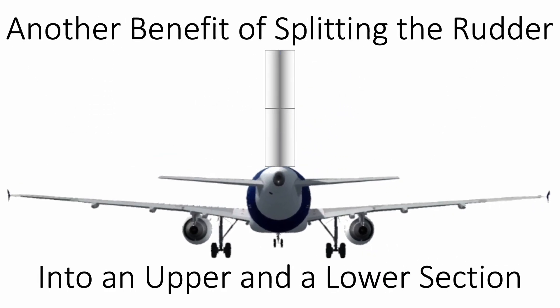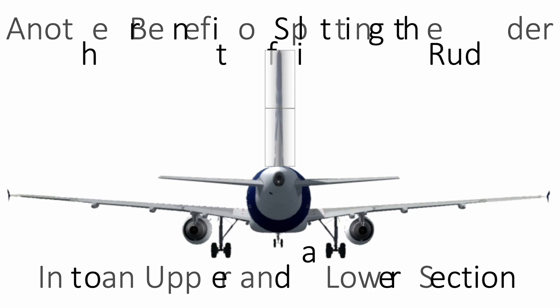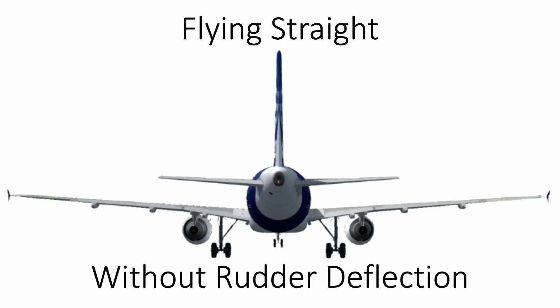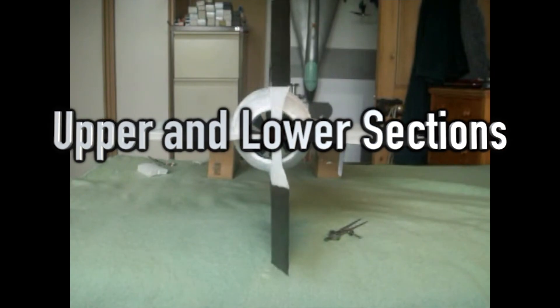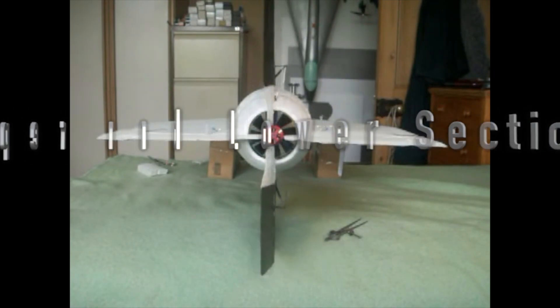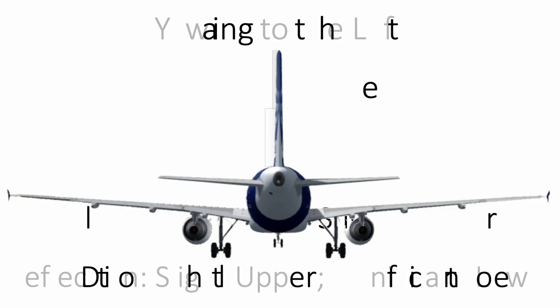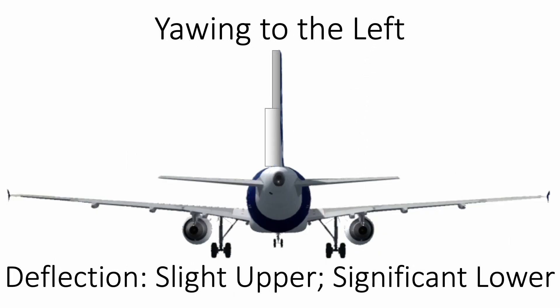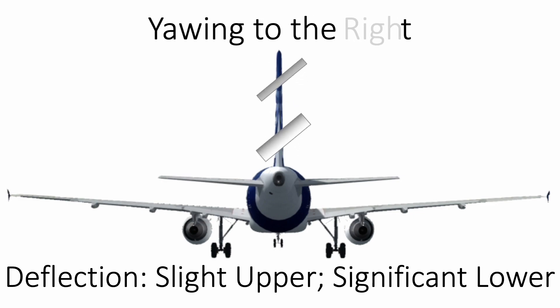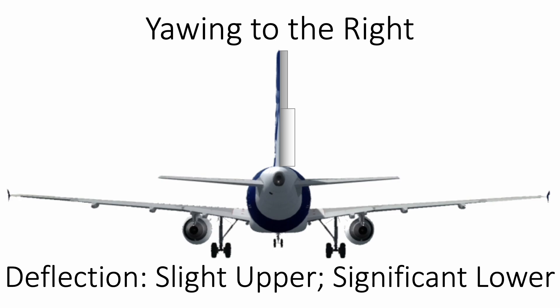Now that you understand why the upper and lower sections of a rudder can move in opposing directions, there is also another good reason to split the rudder into two. While the lower section is only for yawing at lower air speeds, the upper one can also be used at higher air speeds because it deflects a little bit unlike the lower one.